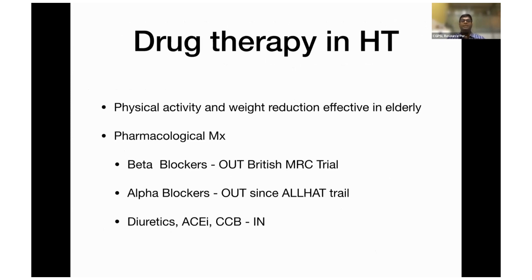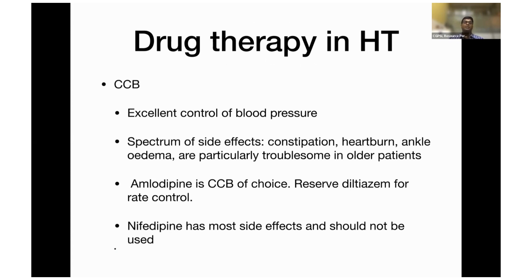Drug therapy for hypertension — apart from pharmacological treatment, first emphasize physical activity and weight reduction. Pharmacological treatment: beta-blockers are out after the British MRC trial. Alpha-blockers also had negative trials. Diuretics, ACE inhibitors, and calcium channel blockers are the mainstay. Calcium channel blockers give excellent BP control, but side effects include constipation, heartburn, and ankle edema. Amlodipine is the drug of choice. Do not use nifedipine as it has more side effects. Thiazide diuretic is the standard first choice — start with very small dose (6.25 mg/day), usual dose 12.5 mg/day, can increase to 25 mg/day. ACE inhibitors are first choice if there is evidence of left ventricular dysfunction or diabetes and have excellent combination with diuretics, but can cause troublesome cough — in that case switch to ARB.